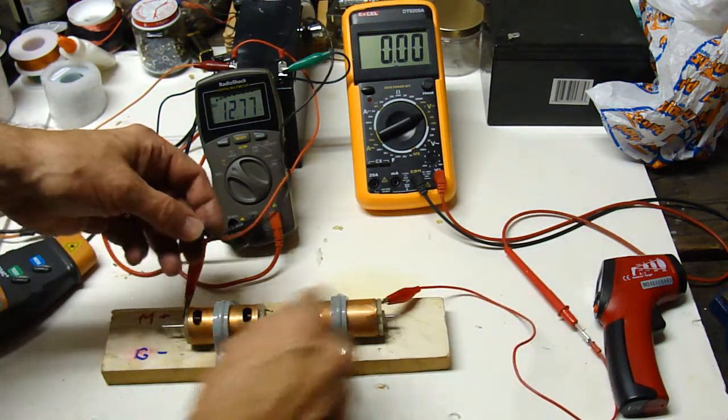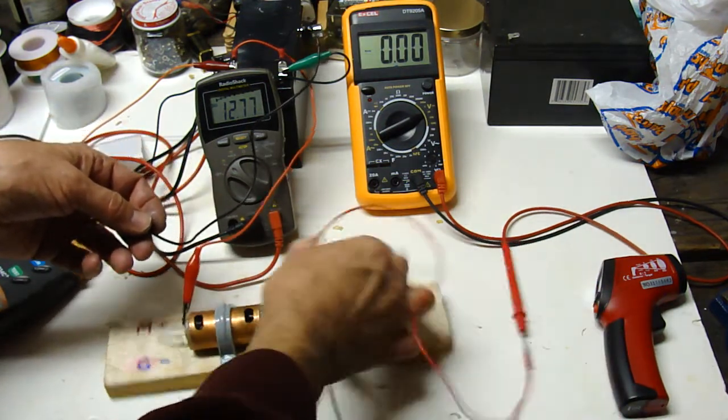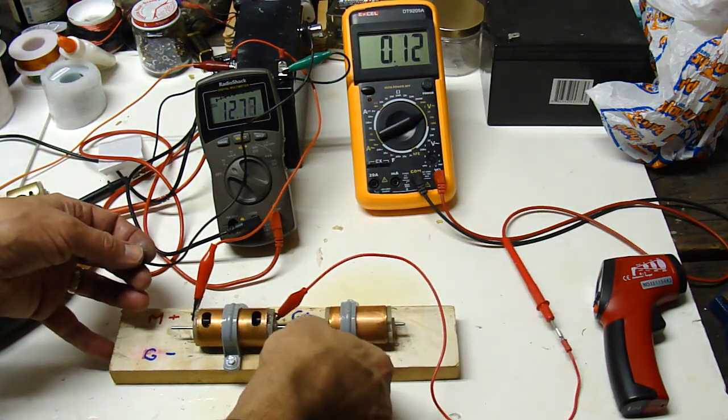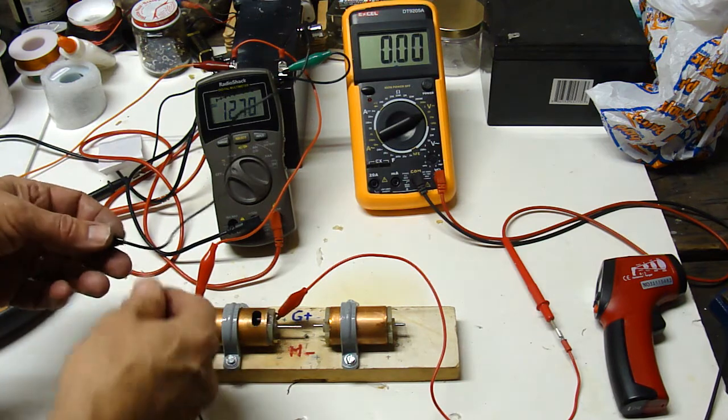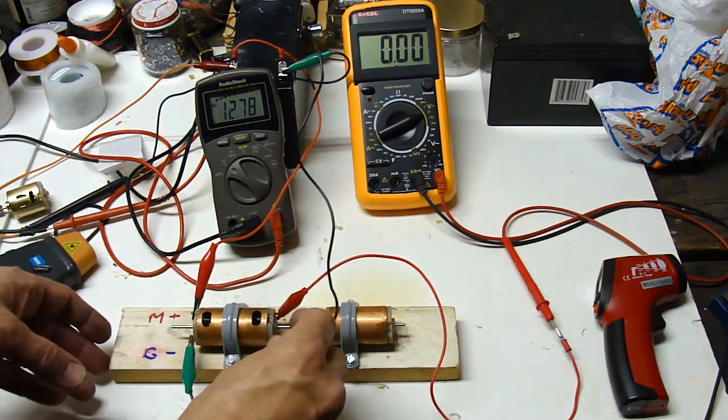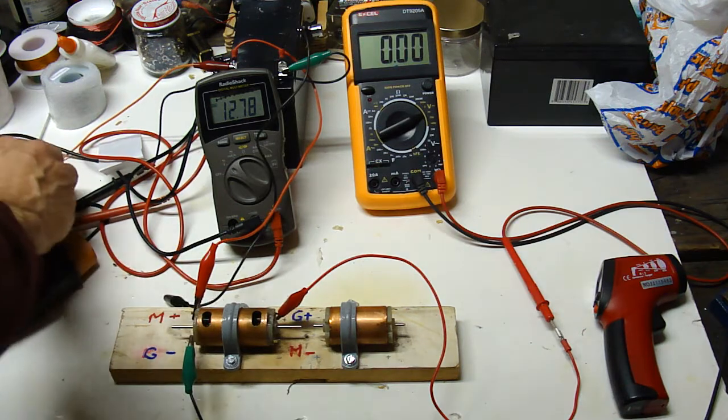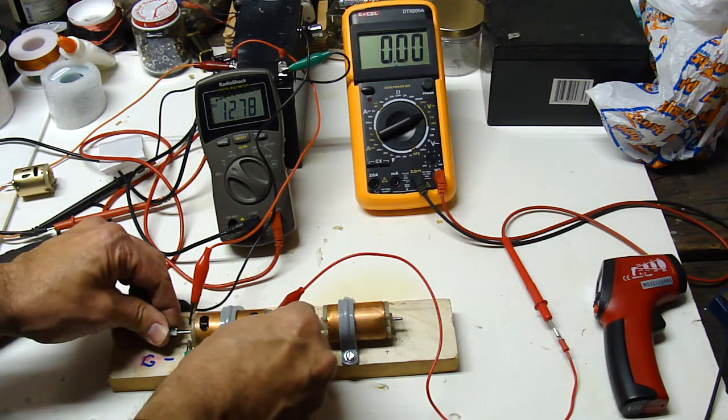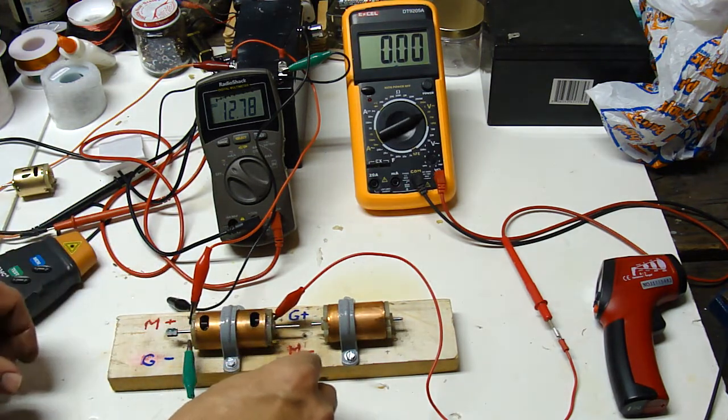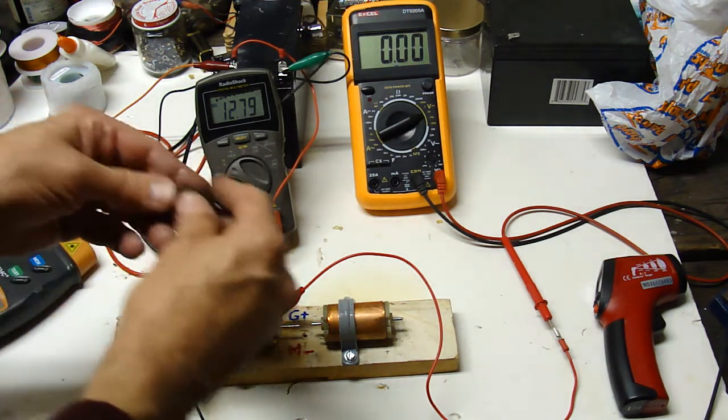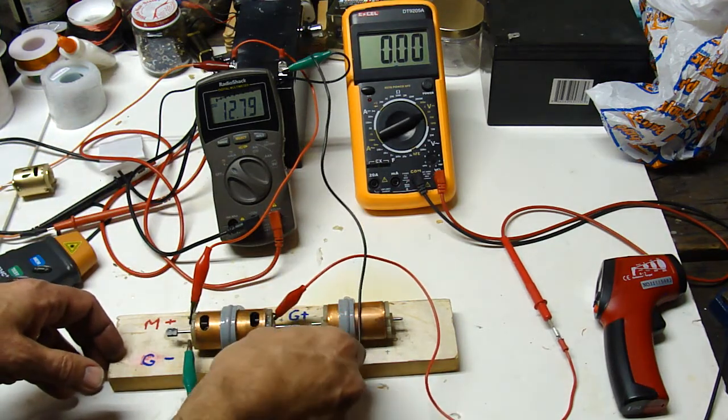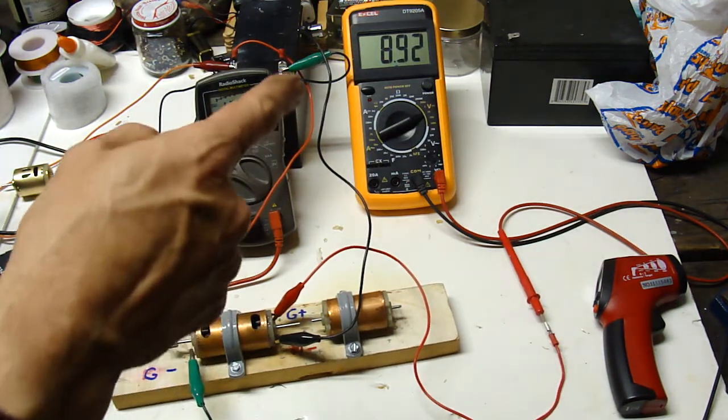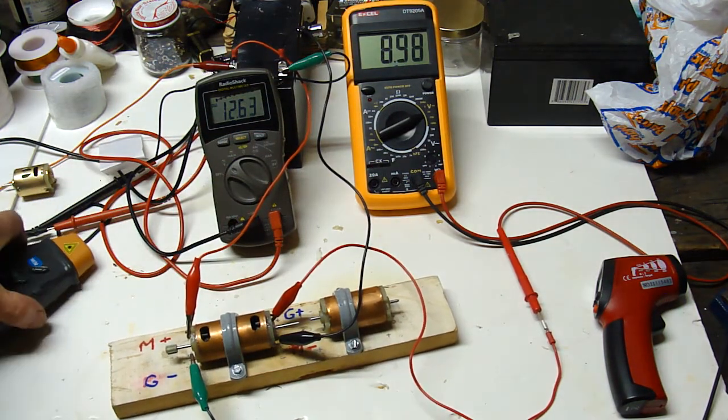Now this is a double rotor style here and is designed to generate more power, and we will verify that it does. Let's get the RPM gauge on this. You see it's generating almost nine volts in generator power there.